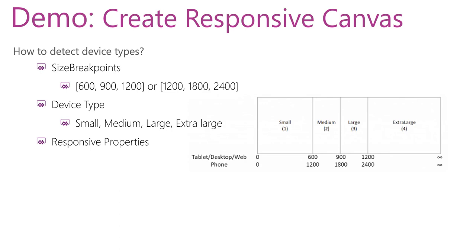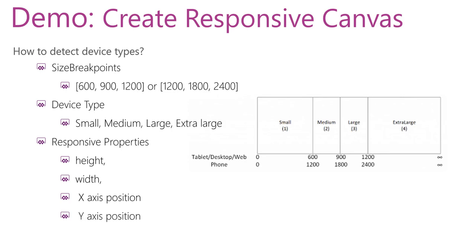Before beginning our responsive layout, we must have good knowledge about these four properties for the screen and any control we need to make responsive. These properties are: Height — the distance the item takes on the Y-axis; Width — the distance the item takes on the X-axis; X position — the position of the item on the X-axis, beginning at 0 from the left and increasing to the right; and Y position — the position of the item on the Y-axis, beginning at zero from the top of the app.